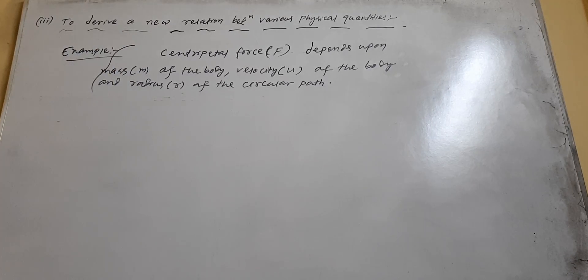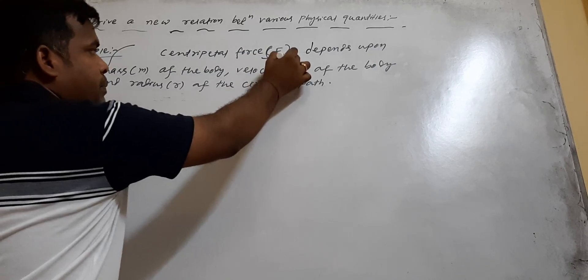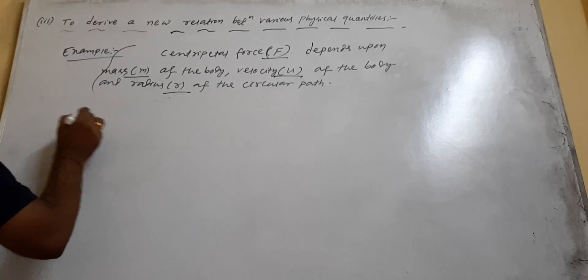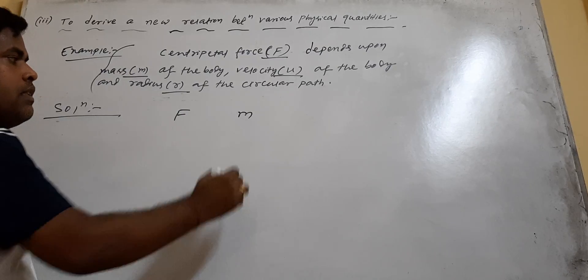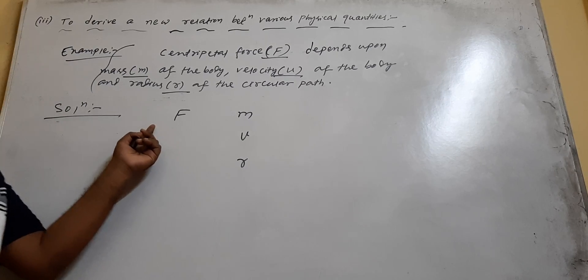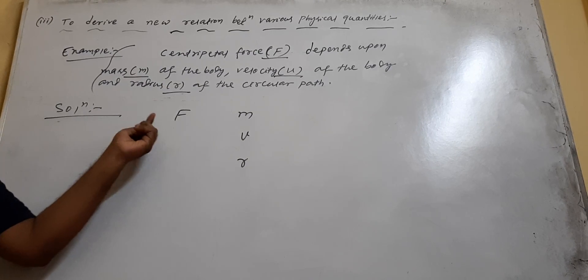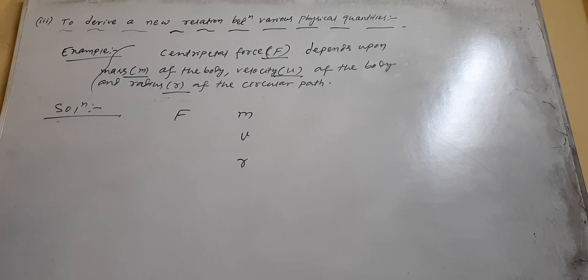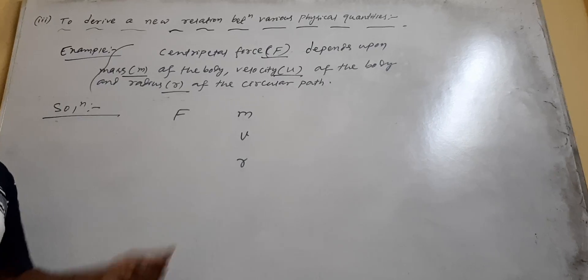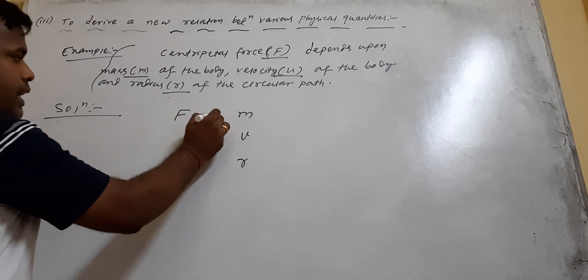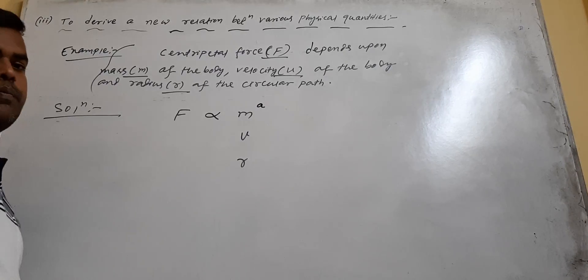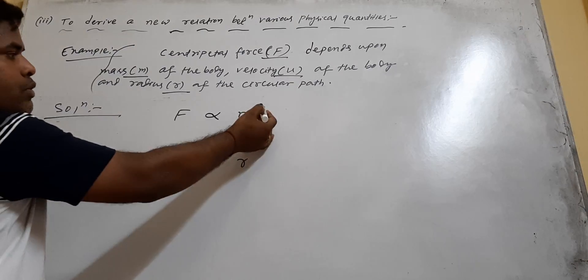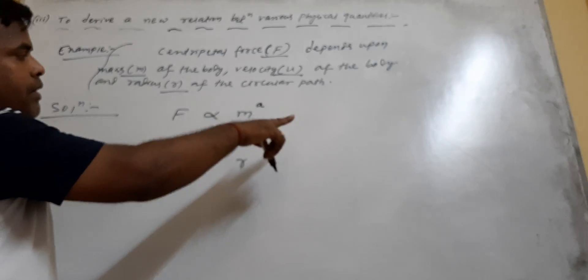Only these will be given. Now we will find the expression of centripetal force in terms of mass, velocity, and radius. How centripetal force depends upon mass is not given; how force depends upon velocity is also not given; how it depends upon radius is also not given. Only it is given that force depends upon mass, velocity, and radius. Then you will write F proportional to M to the power A — if A is positive, directly proportional; if A is negative, then inversely proportional to M.